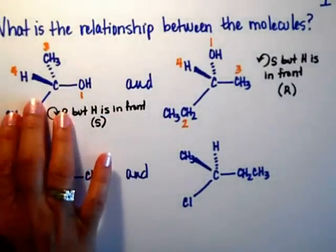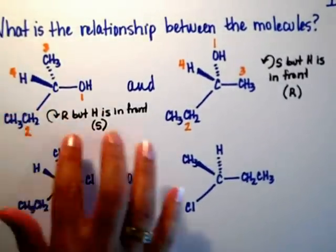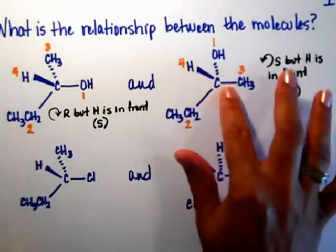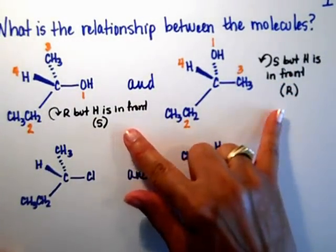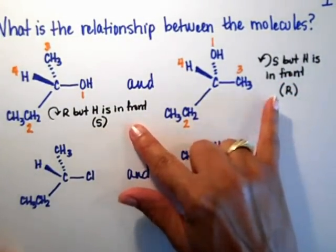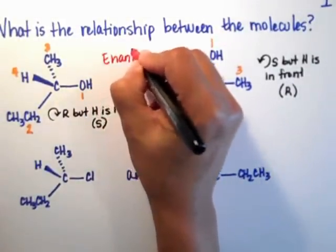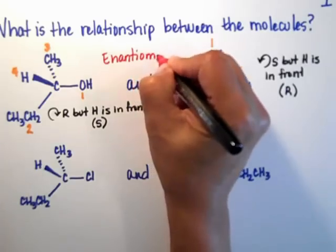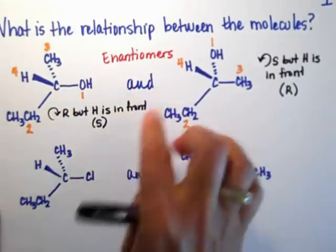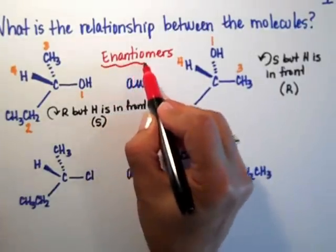So I have the molecule that's on the left. It's the S enantiomer. The molecule that's on the right is the R enantiomer, and the relationship between S and R—those two are enantiomers of each other. They're perfect mirror images, and they're non-superposable, so they're enantiomers of each other.